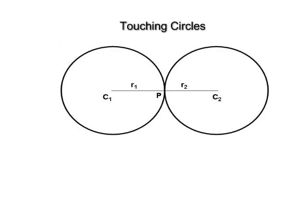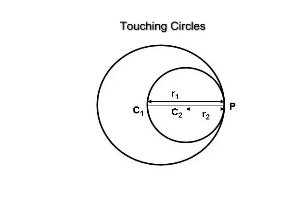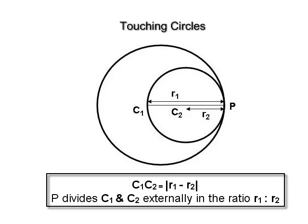Touching circles: if c₁, c₂ are the centers and r₁, r₂ are the radii of two circles, then these circles touch each other externally if the distance c₁c₂ = r₁ + r₂, and the point of contact P divides c₁c₂ in the ratio r₁ : r₂. Circles touch each other internally if c₁c₂ = |r₁ − r₂|, and the point of contact P divides segment c₁c₂ externally in the ratio r₁ : r₂.